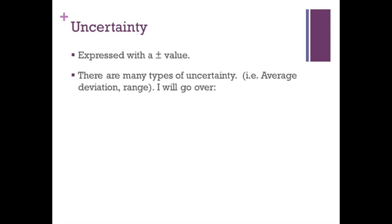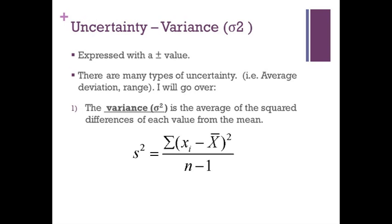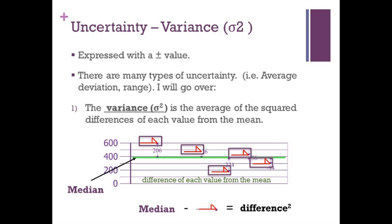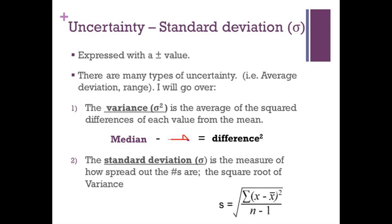Lastly, we have uncertainty. Uncertainty can be expressed with a range of values, a plus or minus. There are many types of uncertainty, including average deviation and range, but we'll focus on two other ones. The first being the variance, which is the average of the square difference of each value from the mean. So take a look at this image. What you would do is that you would take the difference of each value, which is shown in the red lines, from the mean, which is the green line, and then you would square it, then divide it by the number of measurements, which in this case is 5. The standard deviation measures how spread out the values are from each other. It is calculated by obtaining the square root of the variance.